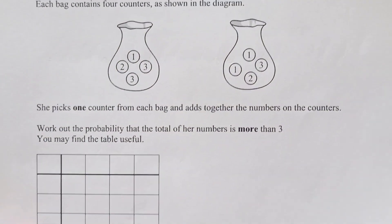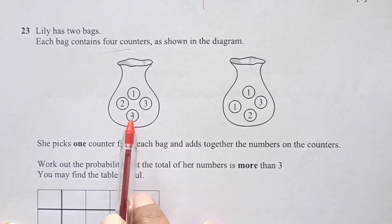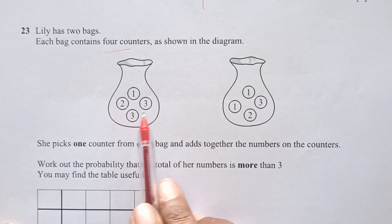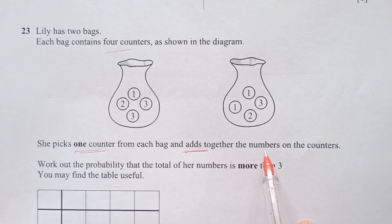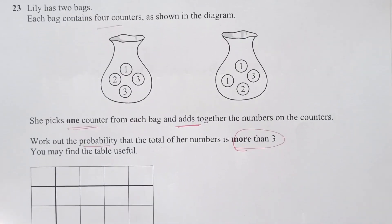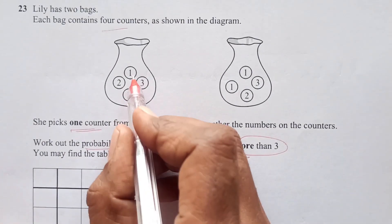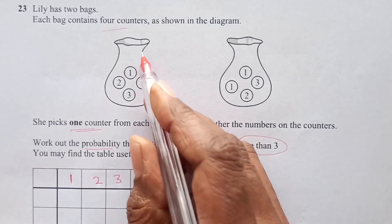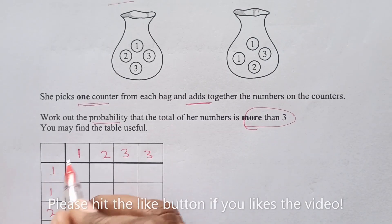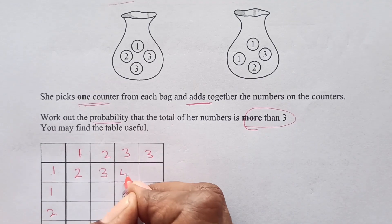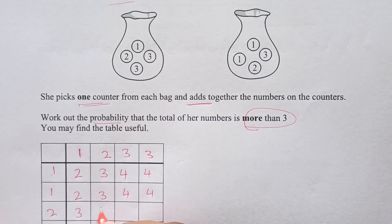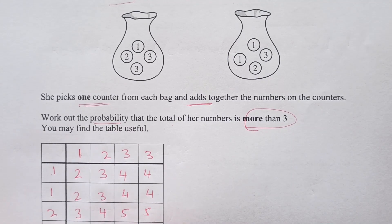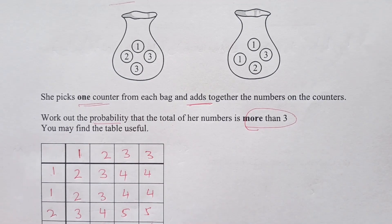Number 23. Lily has 2 bags. Each bag contains 4 counters as shown in the diagram: 1, 2, 3, 3 and 1, 1, 2, 3. She picks 1 counter from each bag and adds the numbers on the counters. Work out the probability that the total of the numbers is more than 3. This table may be useful. We can have a sample space diagram here. We have here 1, 2, 3, 3. I have taken counters from here. Now counters from here: 1, 1, 2, 3. 1 plus 1 is 2, 1 plus 2 is 3, 1 plus 3 is 4 and 4. 1 plus 1 is 2, 3, 4, 4. 2 plus 1 is 3, 4, 5 and 5. Then 4, 3 plus 2 is 5, 6 and 6.